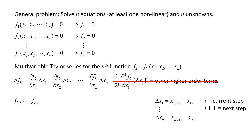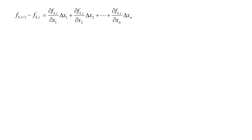fk i plus 1 is the function k evaluated using the values of the variables at the next step i plus 1. The partial derivatives are given the subscript i since they are evaluated using the values of the variables at the current step. We bring the Taylor series approximation equation to the top of the screen and continue. Recall that ultimately we are trying to find the value of the variables x1 through xn that makes the function fk equal to 0.